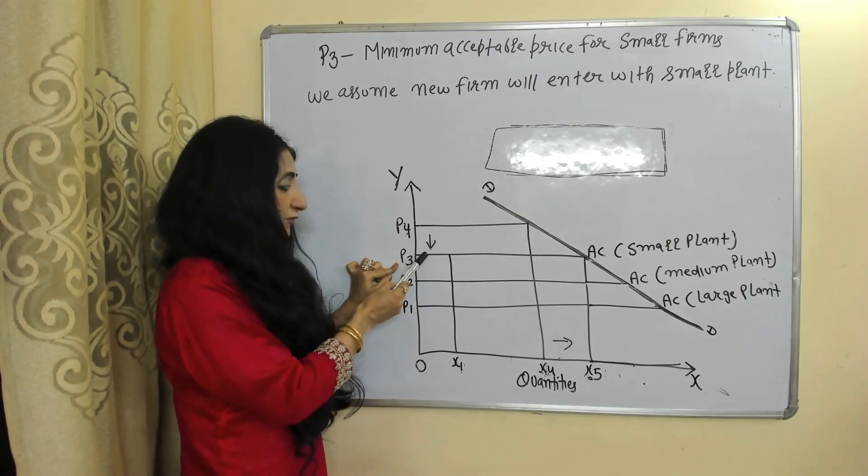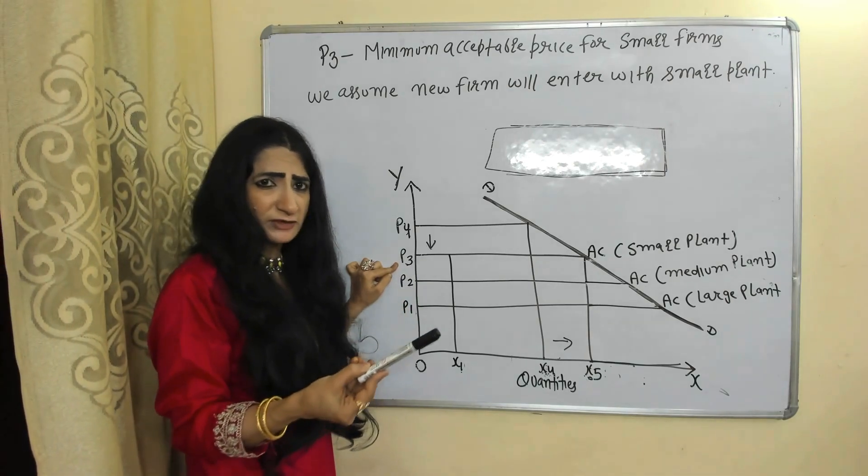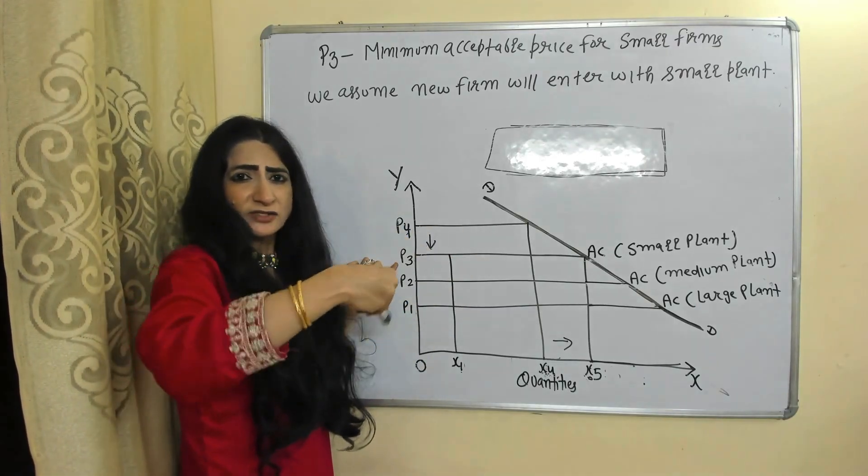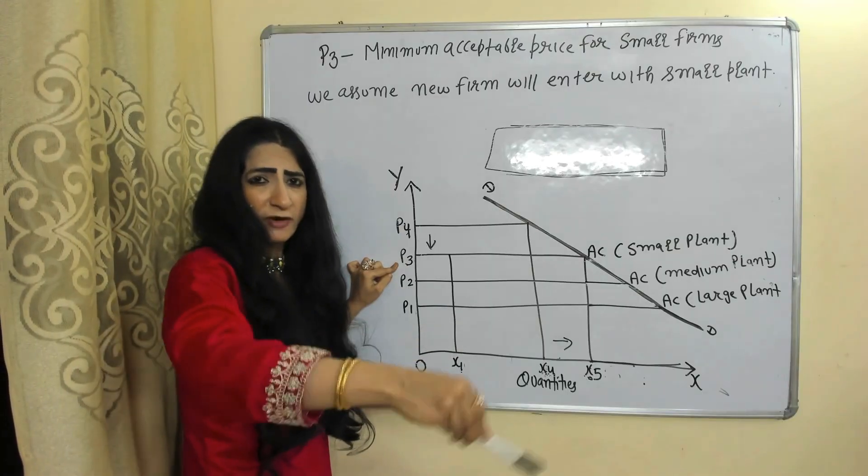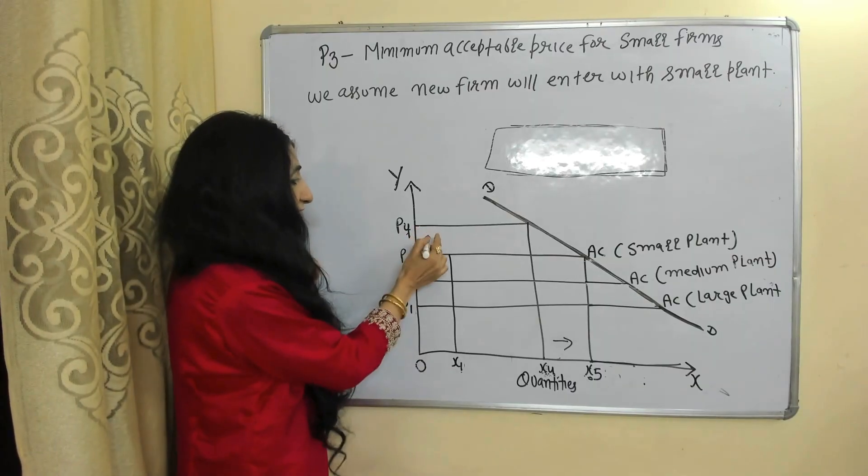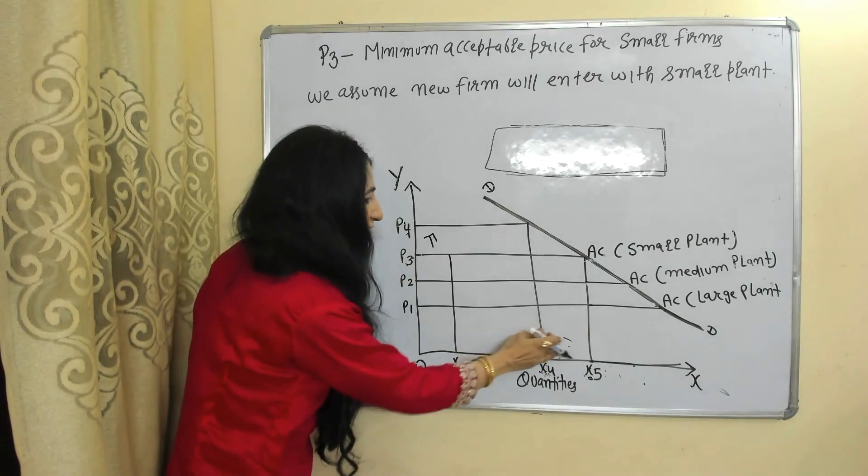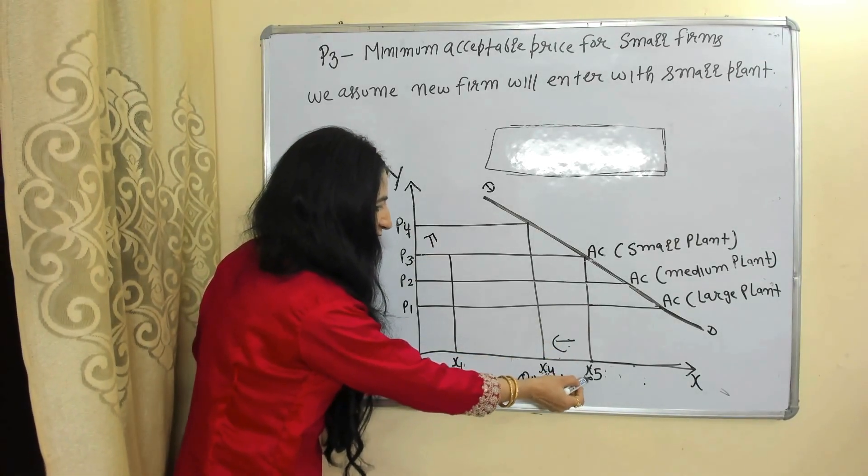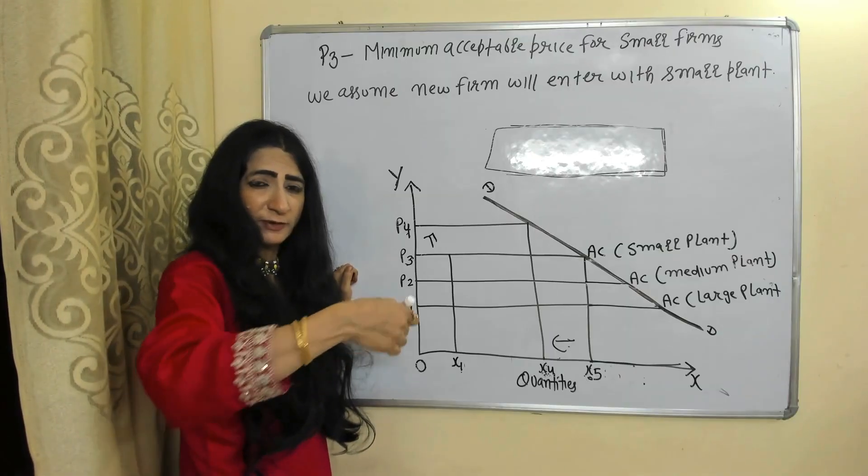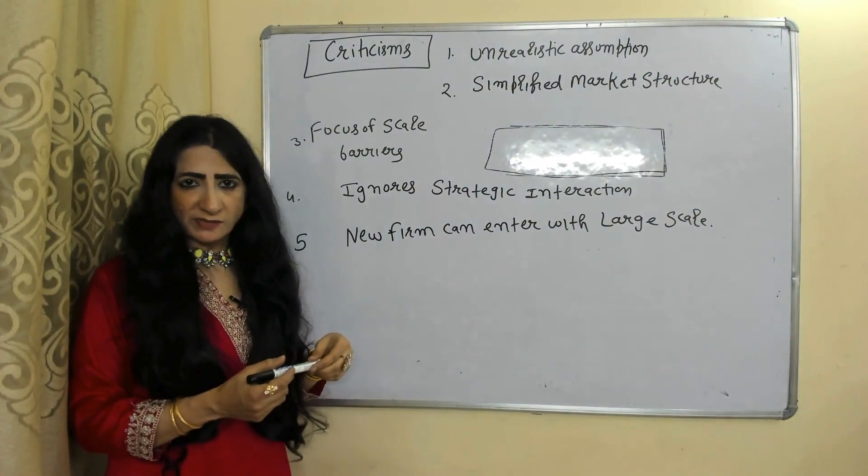And a firm with small plant cannot survive in market if price falls below P3. Suppose the price falls below P3, then obviously small firm will not survive in market and exit from market. As the small or you can say the new firm exits from market, then the leader again increases the price from P3 to P4 and reduces output from X5 to X4. So we can say that this is the strategy for the leader firm for preventing new entry.